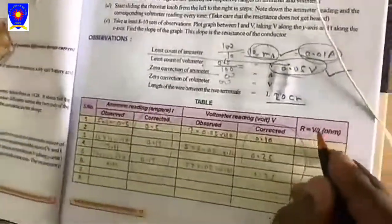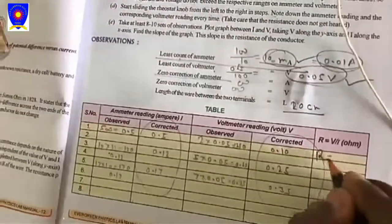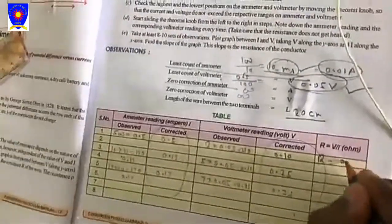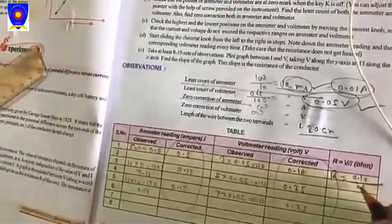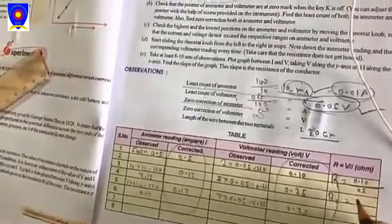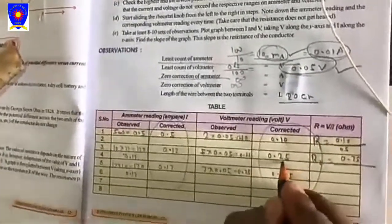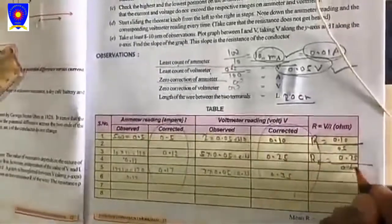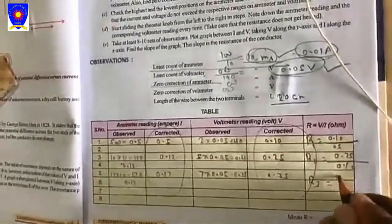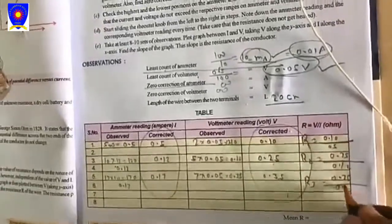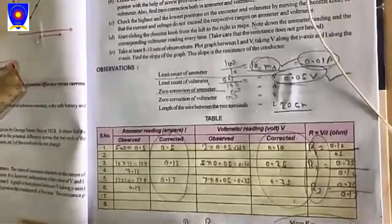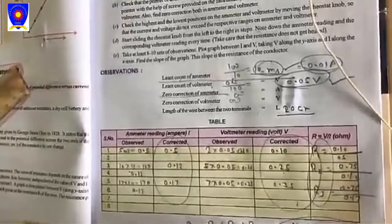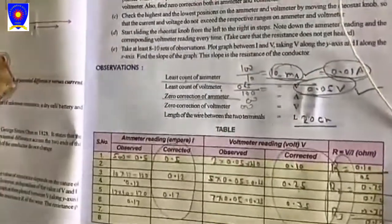We can find capital R from V upon I. For first reading, V is 0.10 and current is 0.5. We can find R1 from here. R2 is 0.25 upon 0.12. And R3 is 0.35 upon 0.17. This is R1, R2, and R3. Now capital R is equal to R1 plus R2 plus R3 upon 3. Now put all the values and calculate capital R.